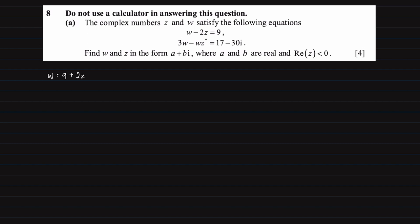Now we will substitute w into 3w minus wz* equals 17 minus 30i. This will give us 3(9 + 2z) - (9 + 2z)z* equals 17 minus 30i.